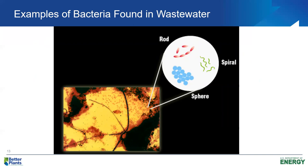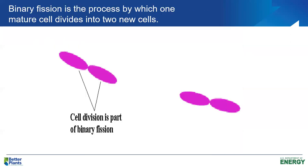Looking again at a micrograph of solids under the microscope, we can see clumps of bacteria. According to this slide, bacteria can be three different shapes: rod-shaped, spiral, or spherical. We'll have different types of bacteria used in the activated sludge process, and we'll typically see all of these in the process. When we look under the microscope, we're not going to see individual bacteria — we'll see clumps of bacteria.